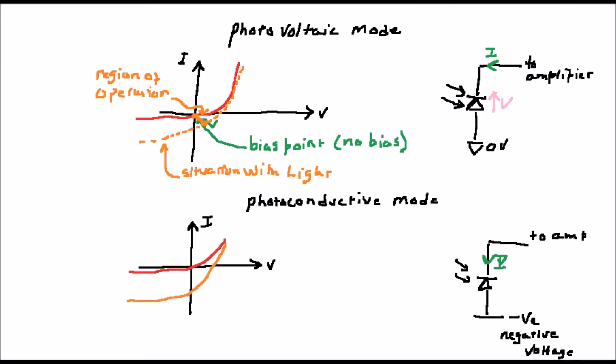Note also that larger area photodiodes are slower for the same reason. They generate a larger capacitance. Photoconductive mode has the advantage of being linear, but the disadvantage is that it is associated with a dark current, and this generates noise in the circuit.